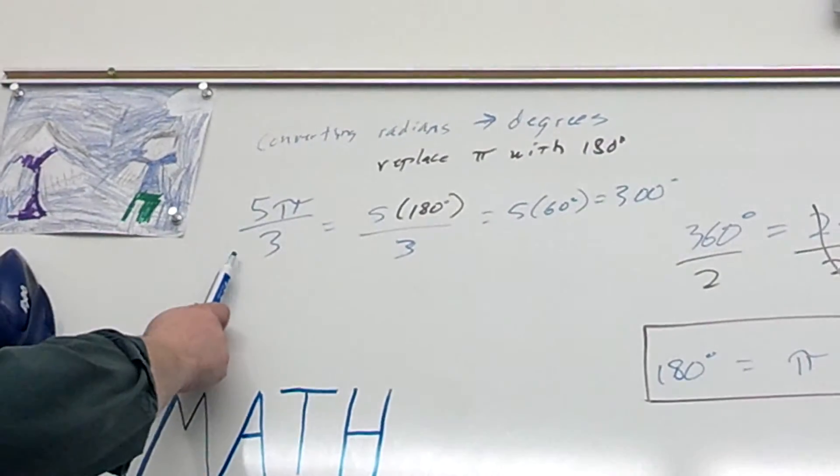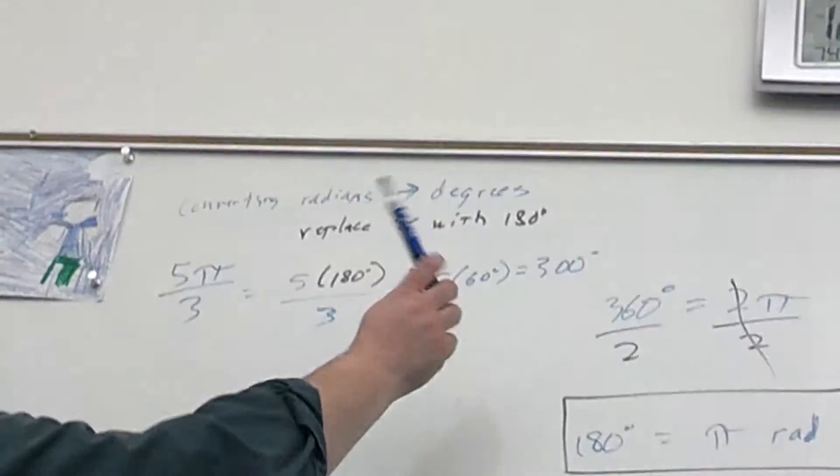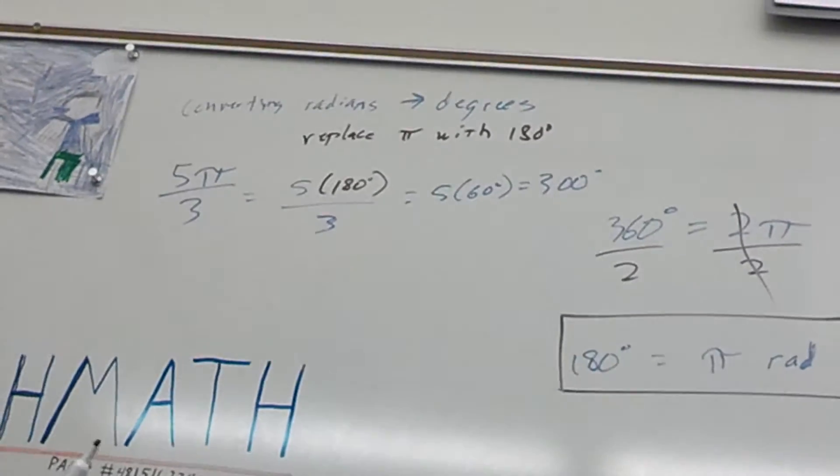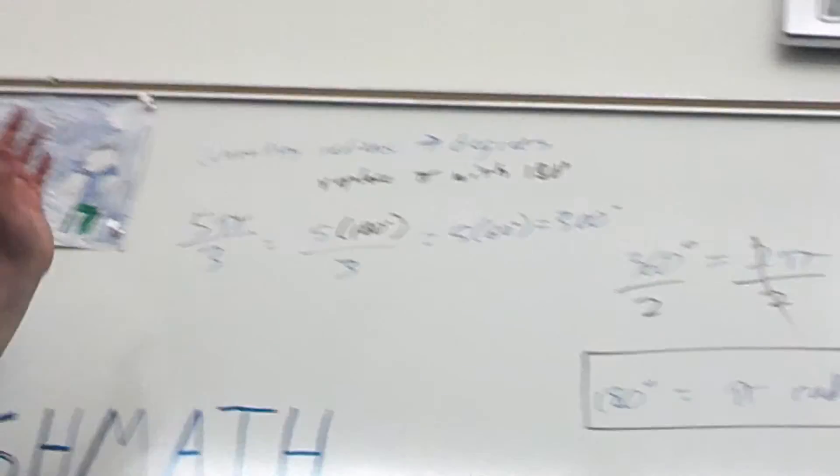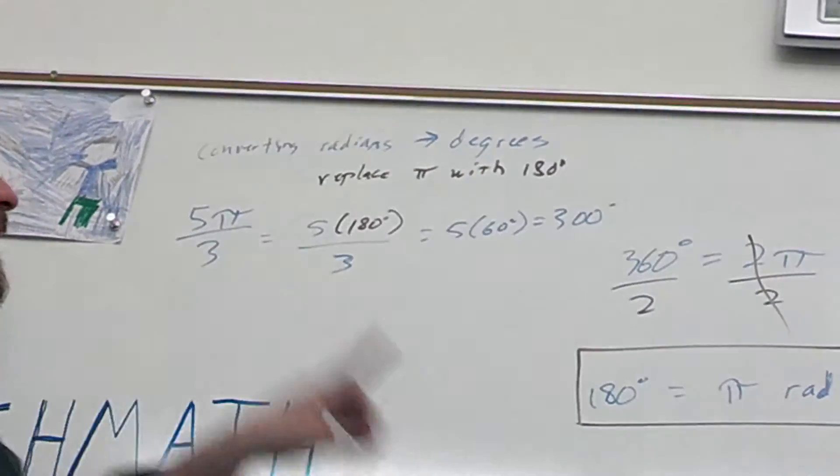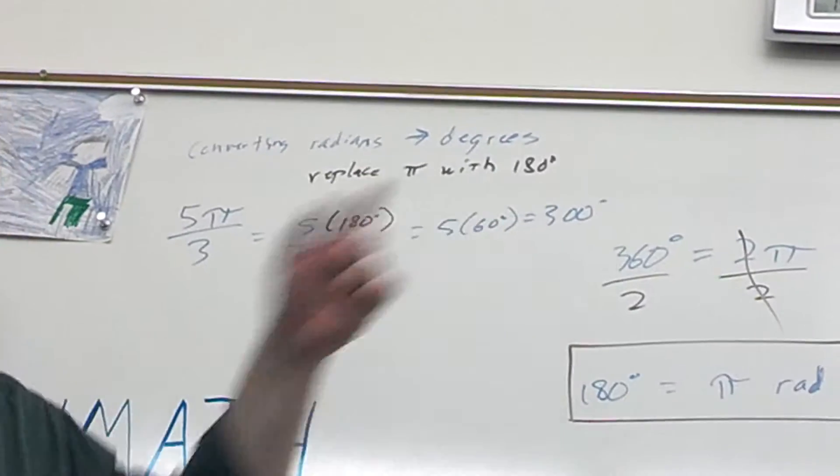So, 5 pi over 3 radians equals 300 degrees. Oh, that's all I need to know. Yeah. So, if you're given an angle that's in radians, replace pi with 180 degrees, simplify whatever the fraction is, and that will tell you how many degrees it is.